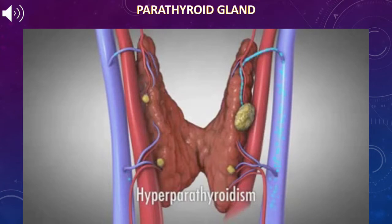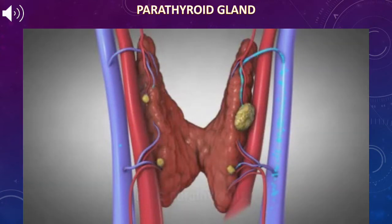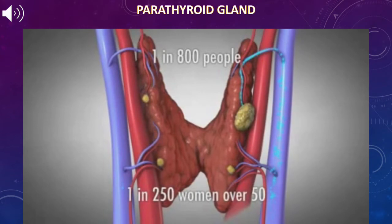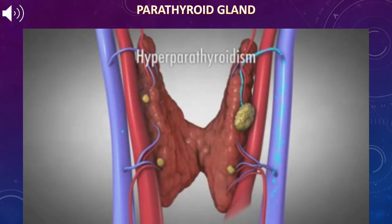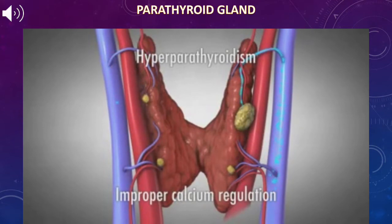Today we discuss the parathyroid gland. Hyperparathyroidism is a disease of the parathyroid glands, affecting 1 in 800 people during their lifetime and 1 in 250 women over age 50. Since parathyroid glands control the levels of calcium in our bodies, hyperparathyroidism is a disease of improper calcium regulation.